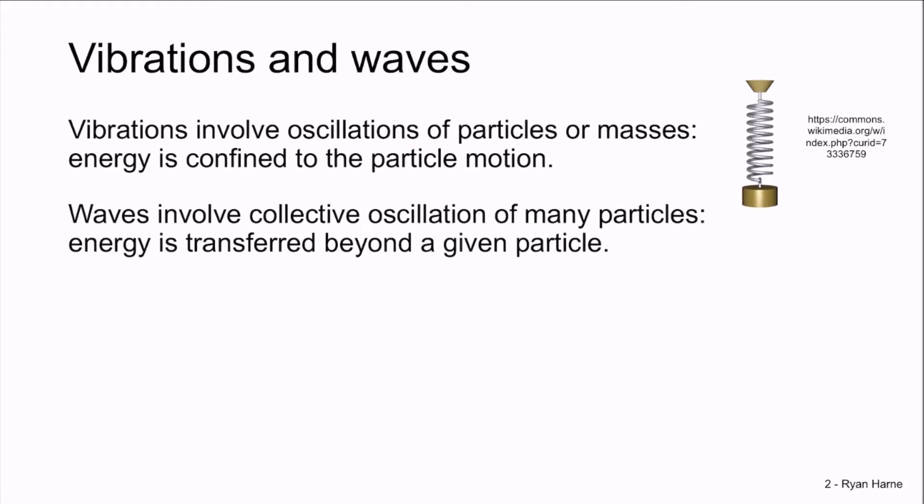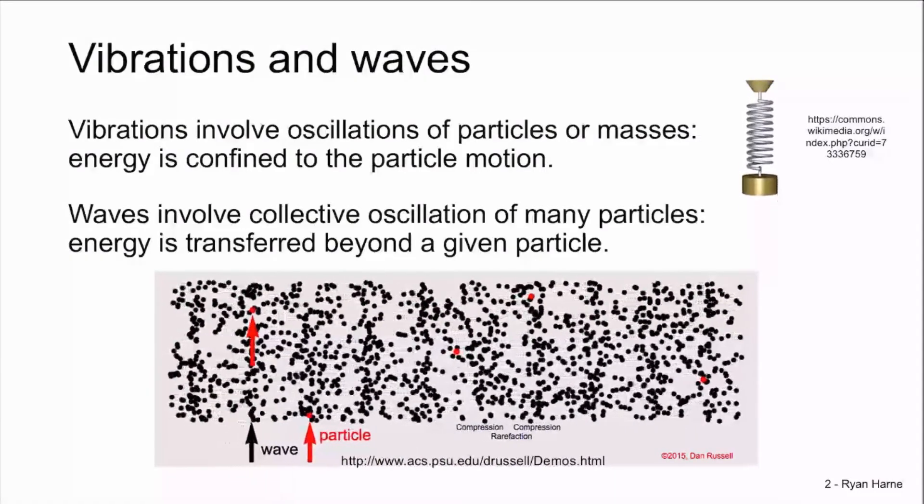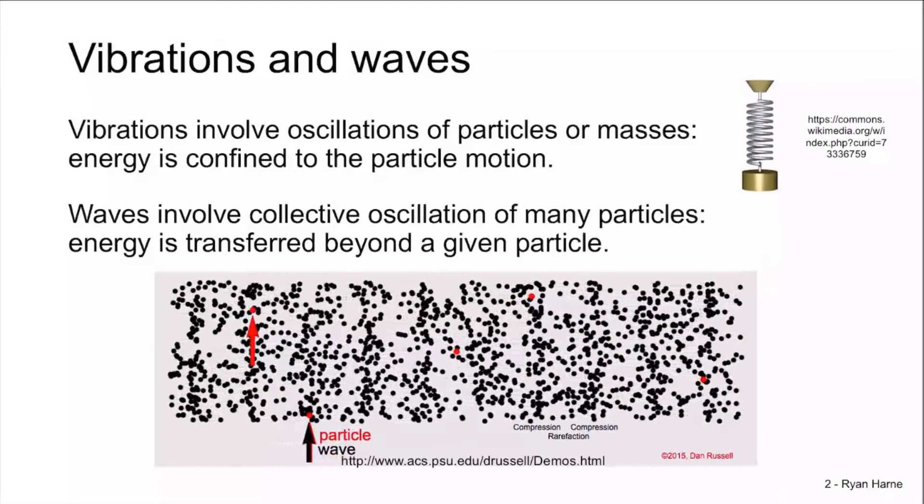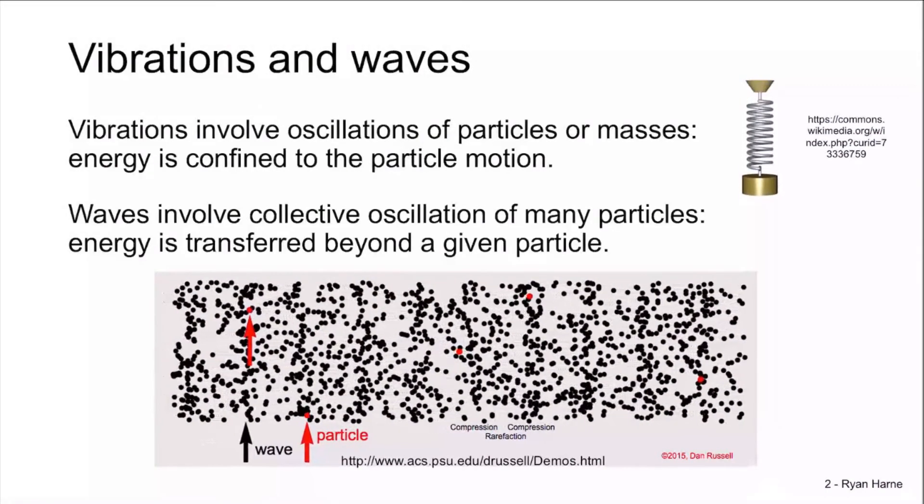But for waves, the oscillation is collective and involves many adjacent particles. Here, the energy goes beyond each individual particle oscillation. So the particles themselves oscillate locally, but the wave is a collective structure that's created due to this adjacent particle interaction. That's the distinguishing factor of waves. They propagate energy beyond given particles.